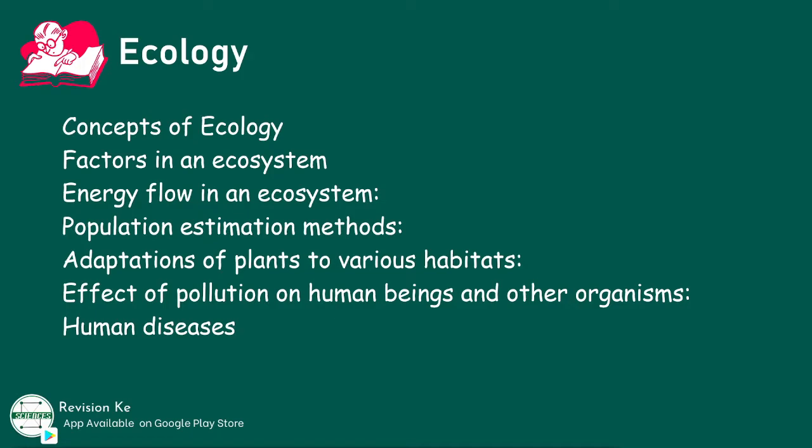Further objectives include: describing the adaptive characteristics of named parasites to hosts, explaining the importance of symbiotic bacteria in leguminous plants, describing the nitrogen cycle, explaining the flow of energy in the ecosystem, and identifying and constructing food chains, food webs, pyramids of numbers, and pyramids of biomass.